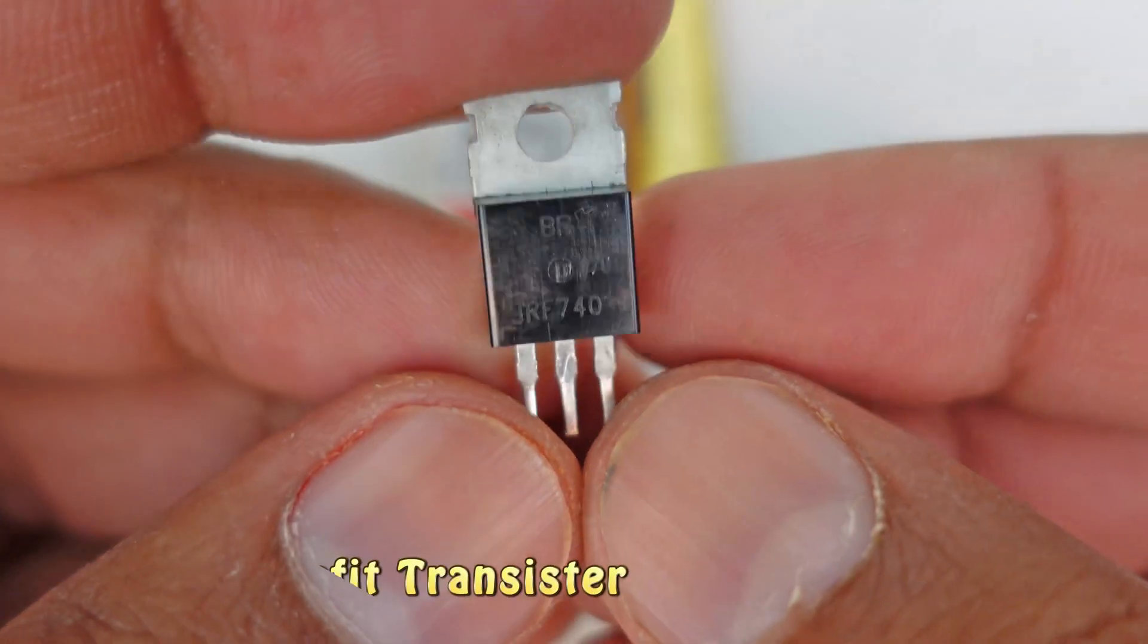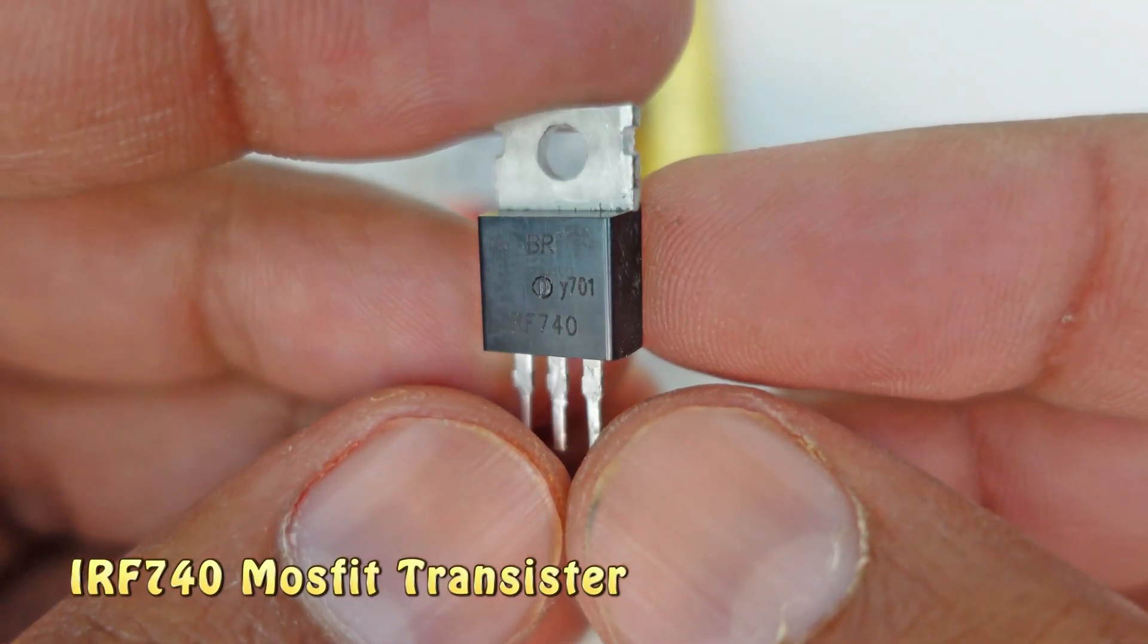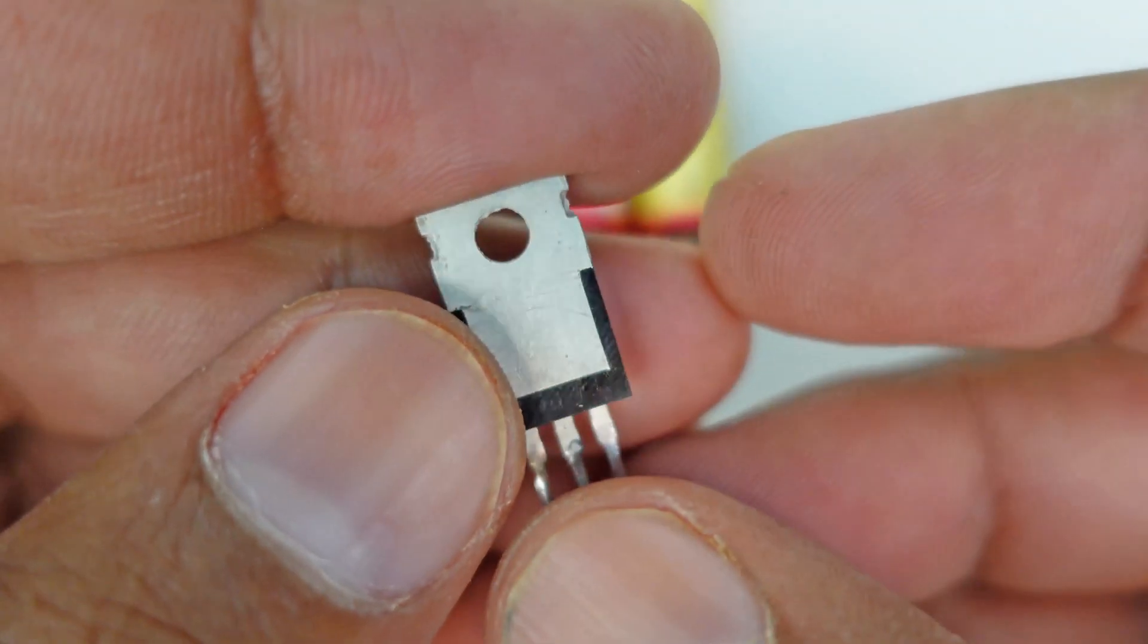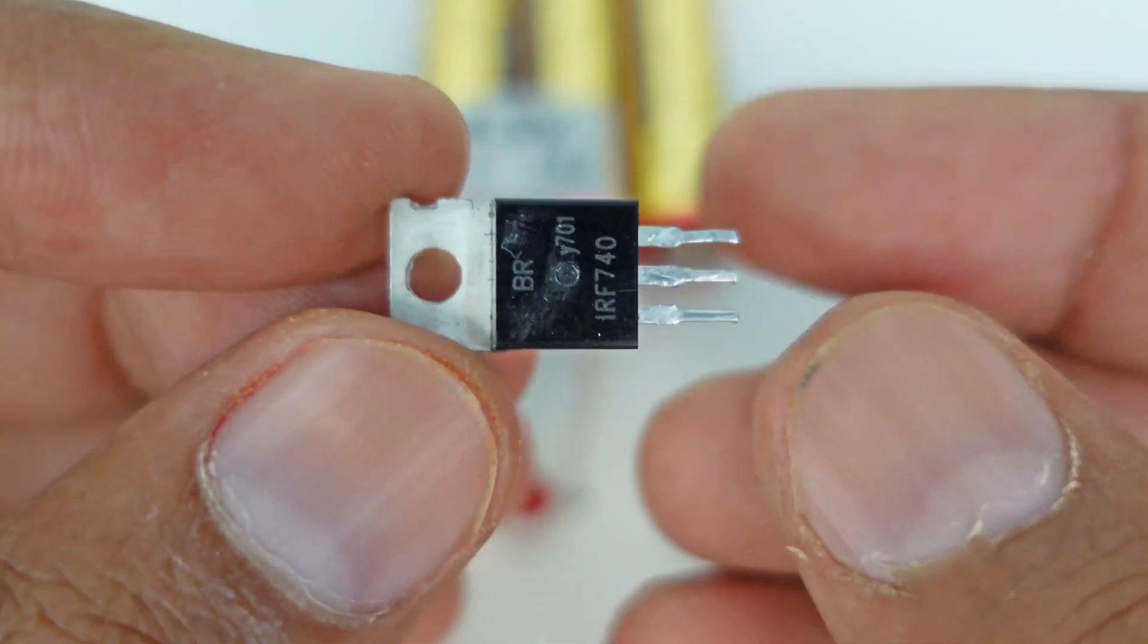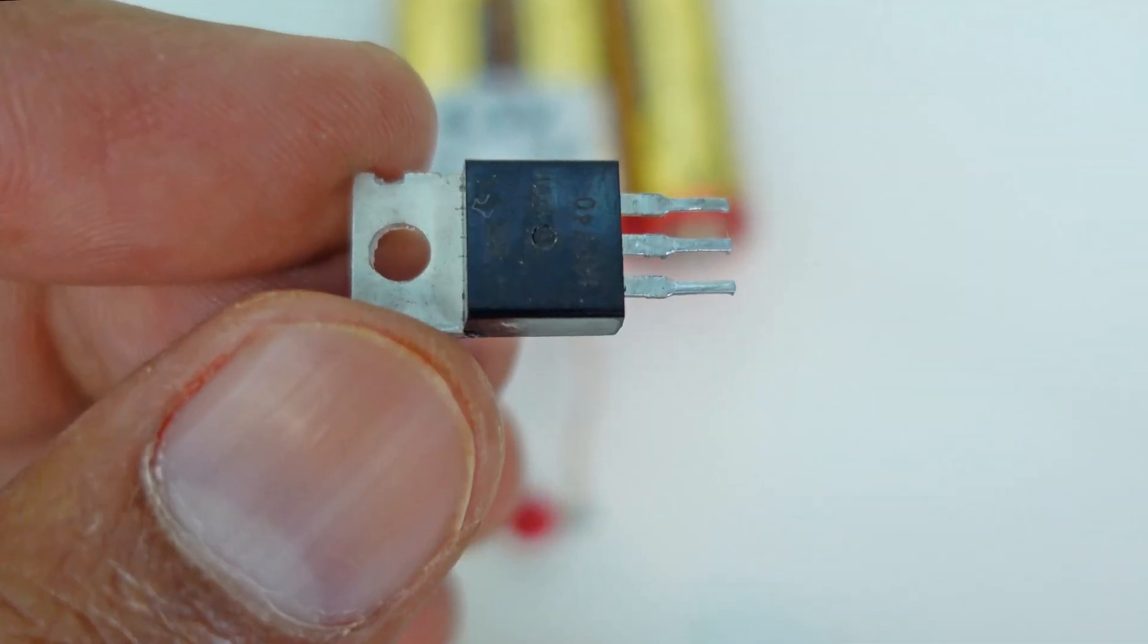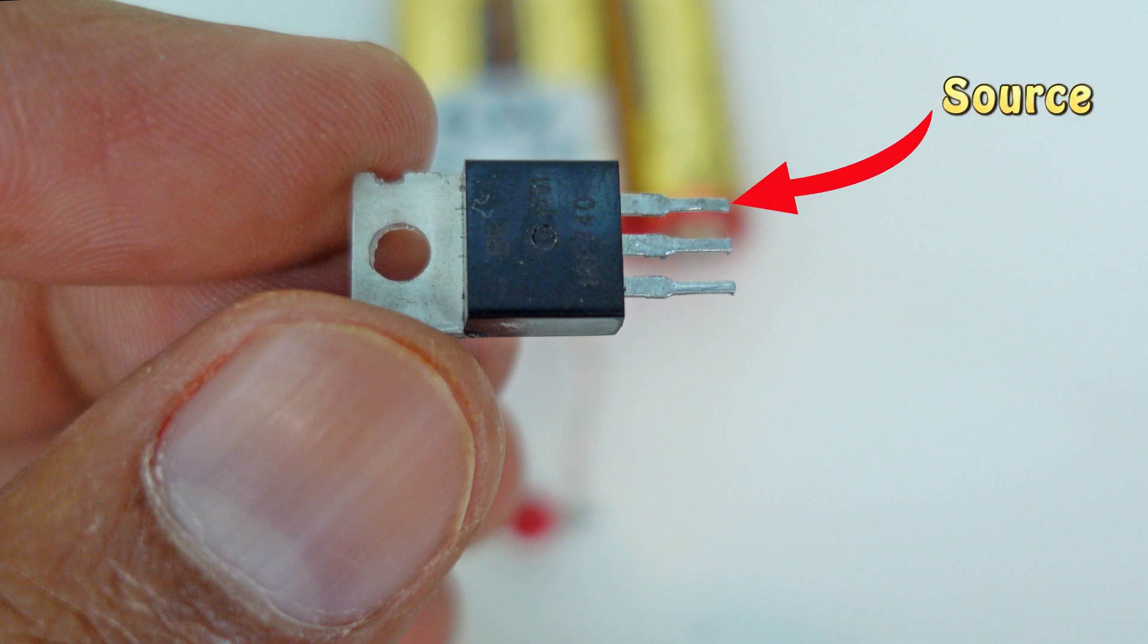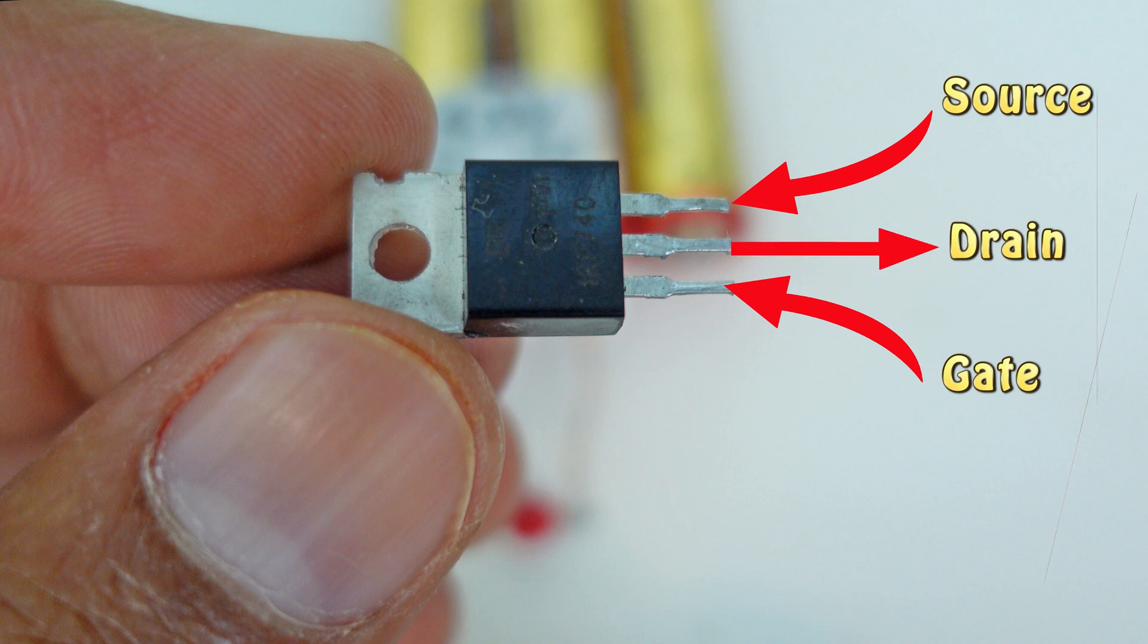Here we have a MOSFET transistor. By this we try to understand a big phenomenon of physics. First we understand the points of MOSFET transistor. Any MOSFET transistor always has three points: source, drain, and gate. The MOSFET receives current from the source, sends current out from the drain, and the gate acts as a switch which controls the flow of current.